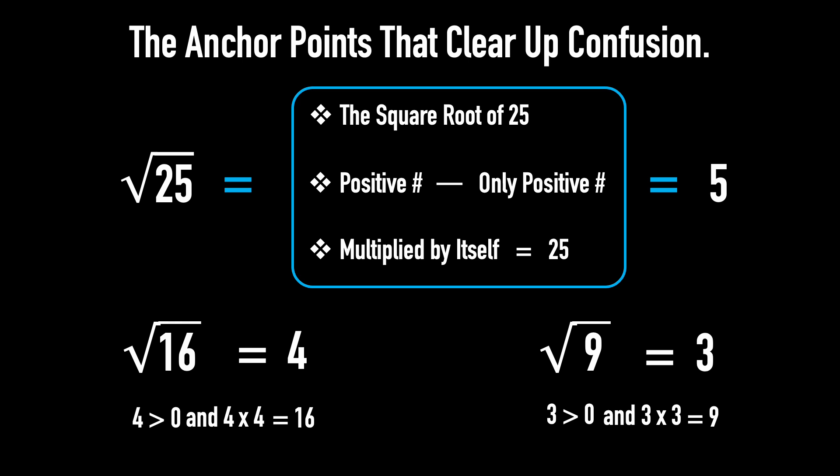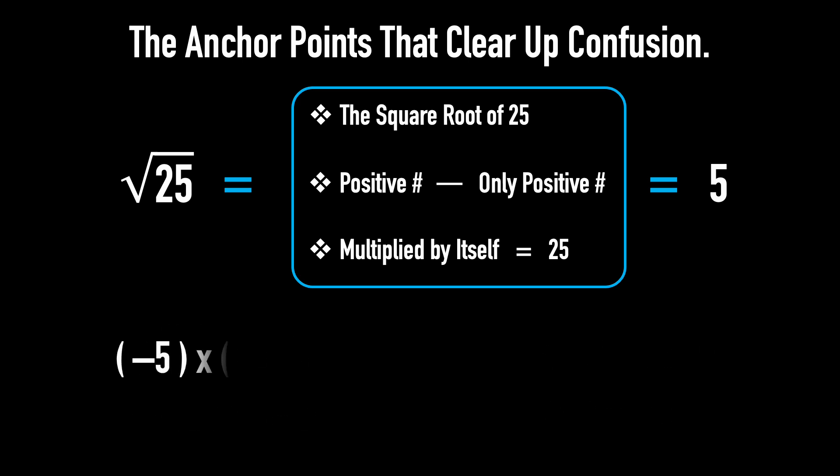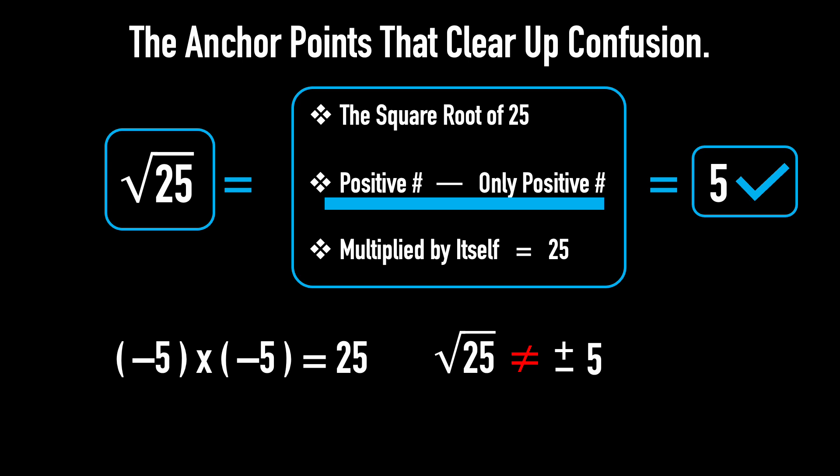Now back to the beginning, I want to emphasize this. Negative 5 when multiplied by itself also gives 25, but it's not a positive number. So never say the square root of 25 is both negative 5 and positive 5. Remember, only one and always positive. Keep this in mind. It will help you avoid misconceptions and confusion.